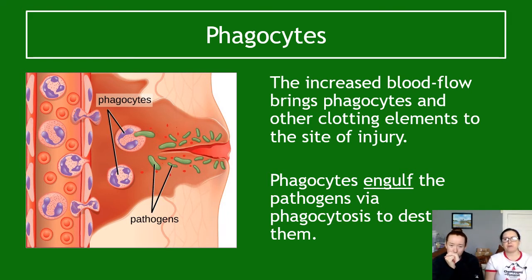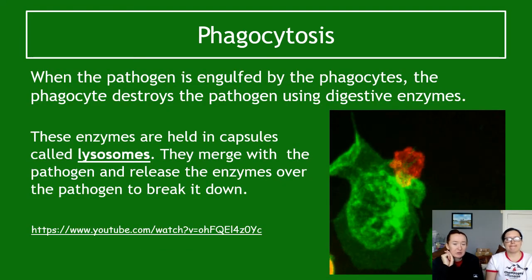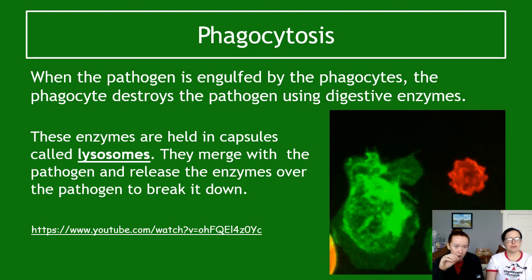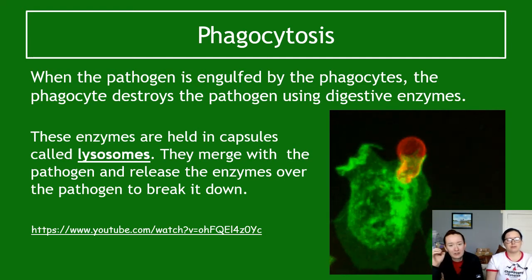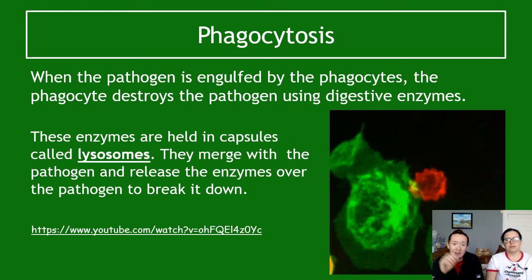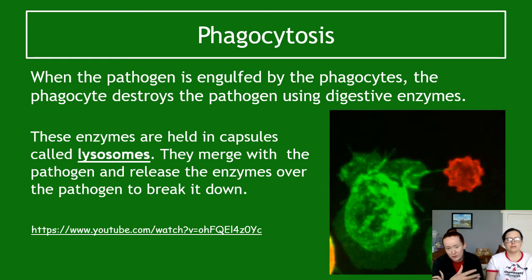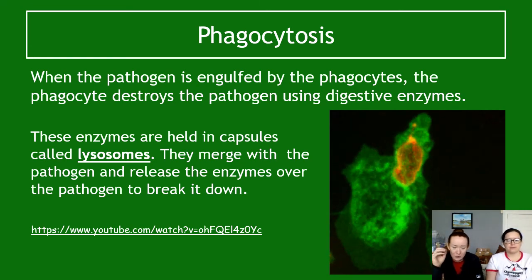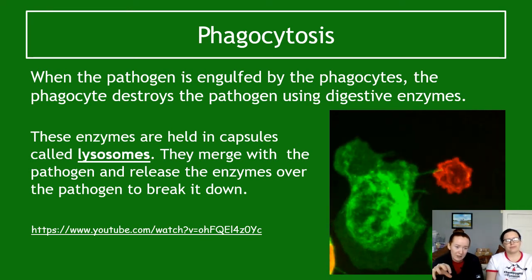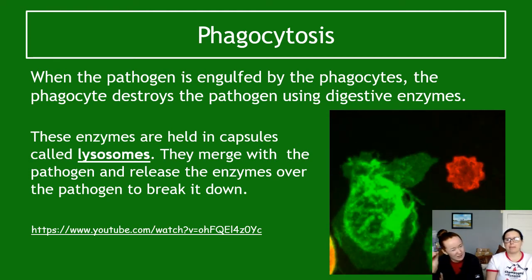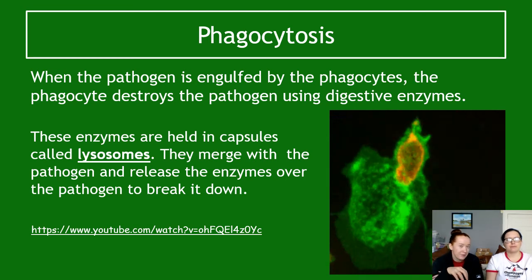Phagocytes, as we remember from National 5, engulf pathogens via phagocytosis and destroy them — we never say phagocytes 'eat' pathogens; we say they 'engulf' them. At Higher level, there is a bit more detail: once the phagocyte has engulfed the pathogen, it destroys it using digestive enzymes. These digestive enzymes are held in a capsule called a lysosome. The lysosome merges with the engulfed pathogen inside the phagocyte, releases its enzymes, and those enzymes break down the pathogen.